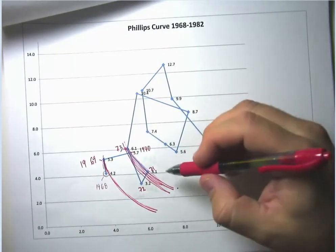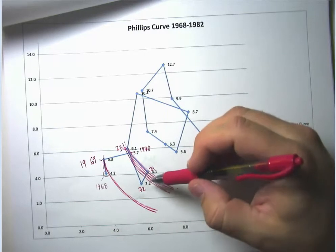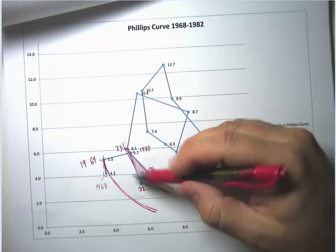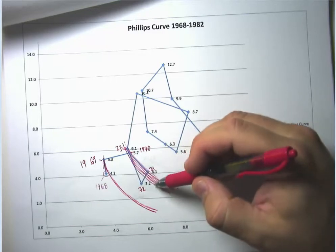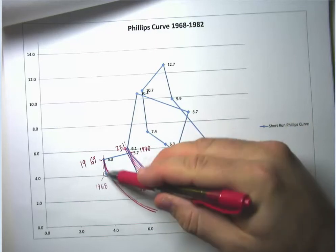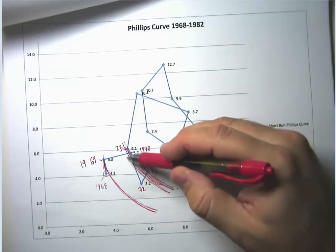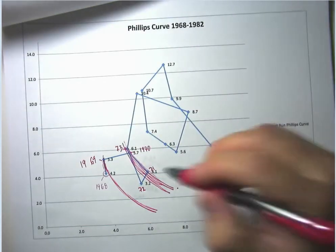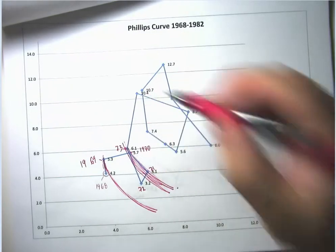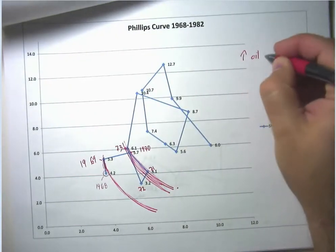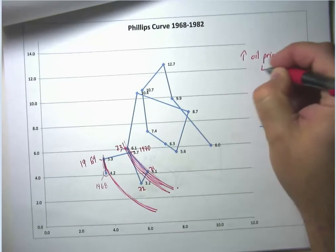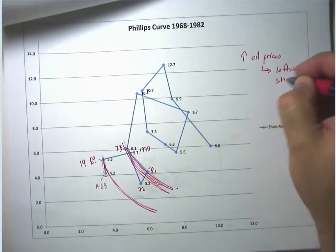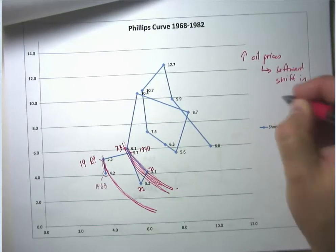One thing to notice here is that in the popular mythology of the 1970s, it's the fact that there are disruptions in oil markets which caused the inflation. But notice inflation had already been creeping up gradually even before we get our first oil shock in early 1973. Now that said, it's true that an increase in oil prices is going to mean a leftward shift, a bad shift in short run aggregate supply.